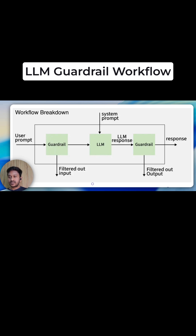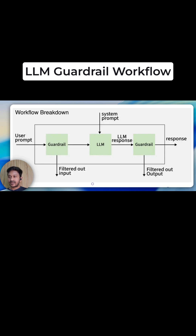Before the response is returned to the user, another guardrail checks for the output, and it verifies for the same things like: does it contain hallucinations, policy violations, legal risk, does it contain toxic or any biased content, is it leaking any private data, or make medical financial claims. So if it fails, the output is not generated, and if it passes, the output is generated and it is shown to the user as an output response.